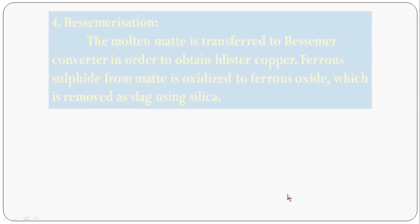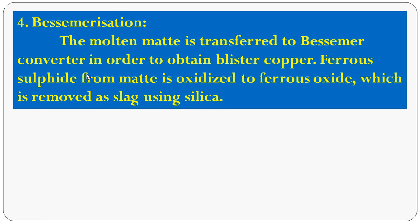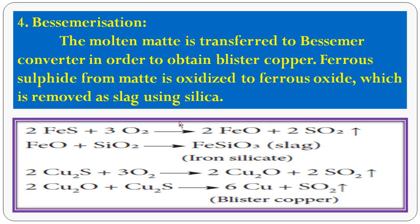The fourth step is Bessemerization, a very important process. The molten matte is transferred into a Bessemer converter to obtain blister copper. Blister copper contains 98% copper and 2% impurities. The 2% impurities can be removed by electrolytic refining. In this step, ferrous sulphide (FeS) from the matte is oxidized to ferrous oxide (FeO), which is removed as slag using silica.